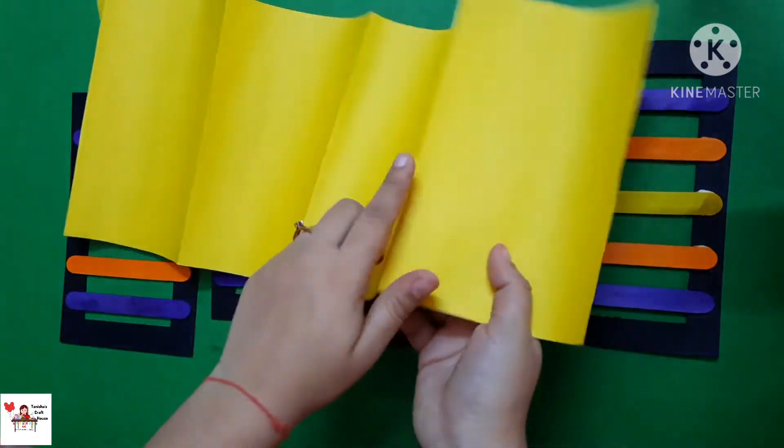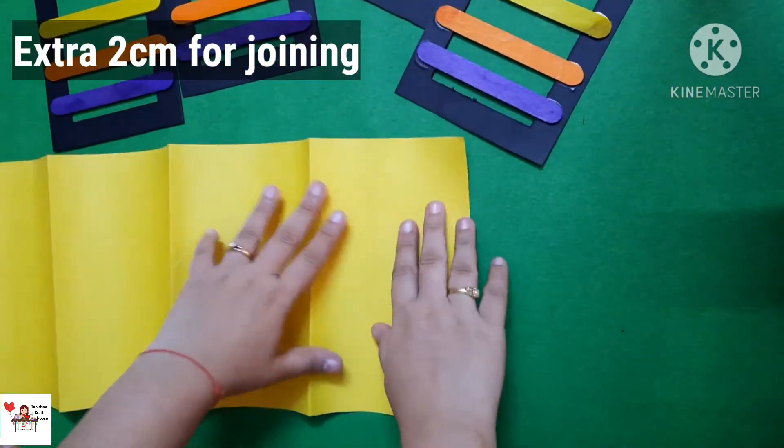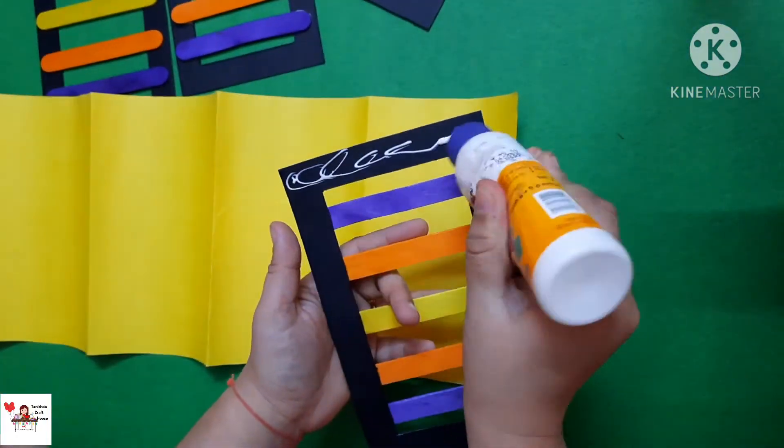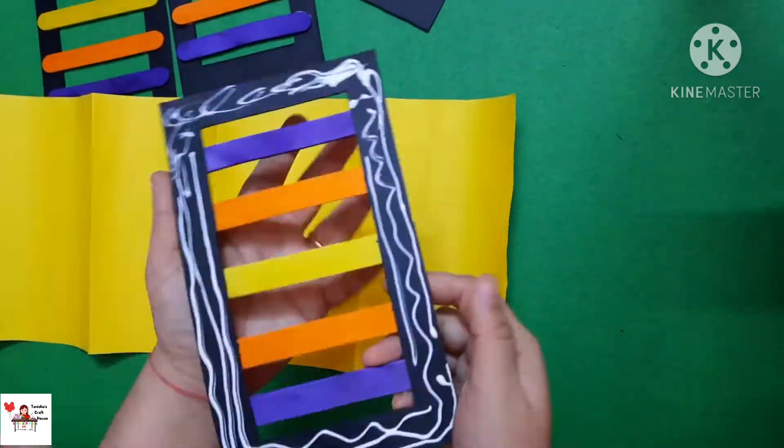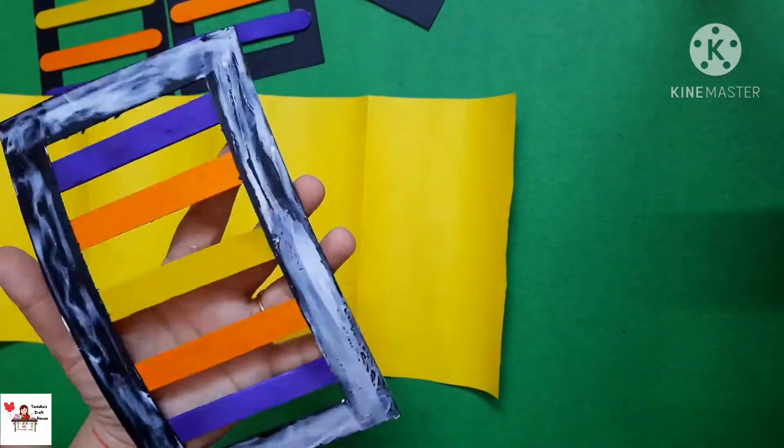Now I've taken a yellow chart paper of size 48 centimeters by 20 centimeters plus the additional two centimeters for joining the four sides. Now I'm going to go ahead and stick these frames onto the paper as shown.